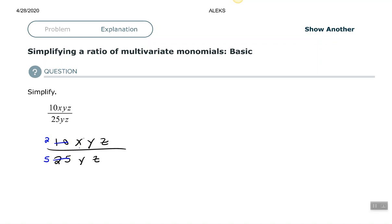And then we also see that we have a Y to the first in the numerator and a Y to the first in our denominator. Same thing with the Z. We have a Z to the first in the numerator, Z to the first in our denominator. They cancel each other out. So we are left with two X in the numerator, two times X. And our denominator, we're left with five.